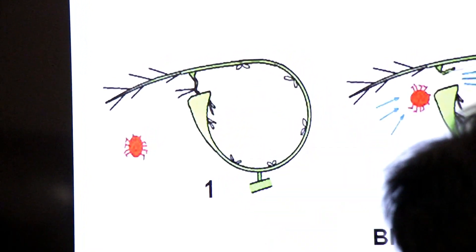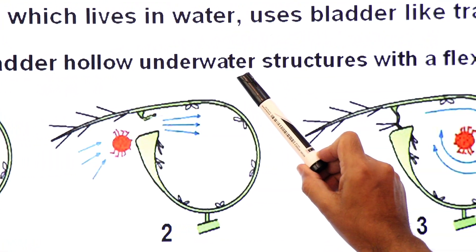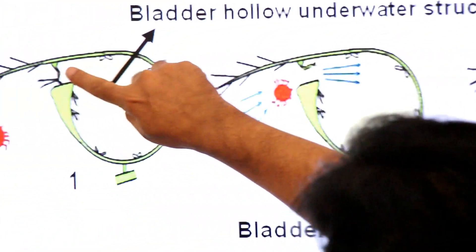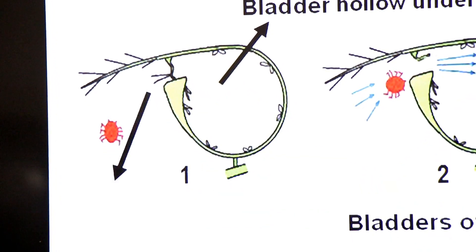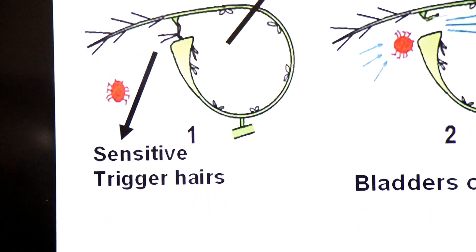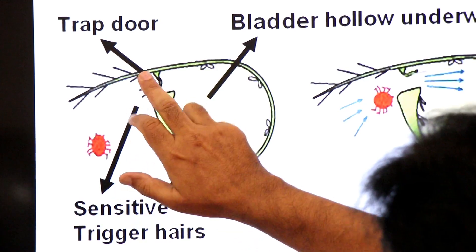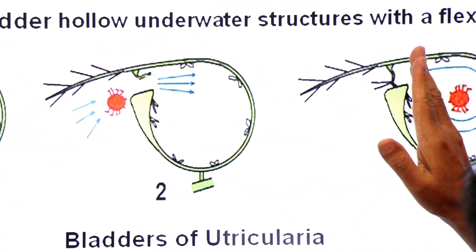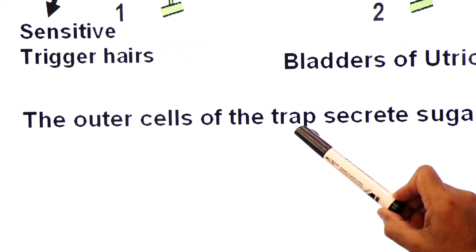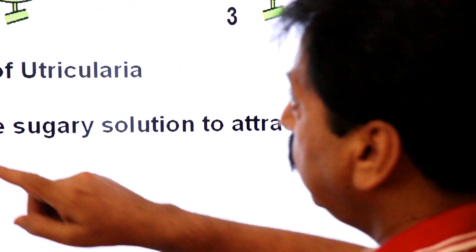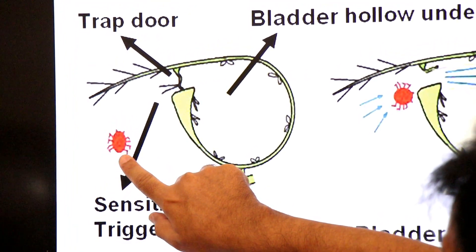Near the trap door, there are sensitive trigger hairs. The outer cells of the bladder secrete a sugary solution to attract insects. When an insect is lured close, it brushes against the trigger hairs connected to the trap door. The trap door opens, and the bladder sucks in water along with the insect.